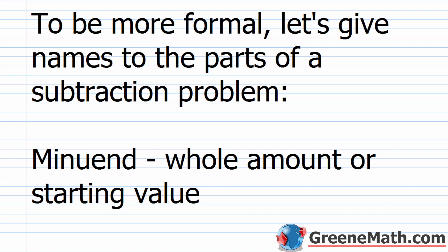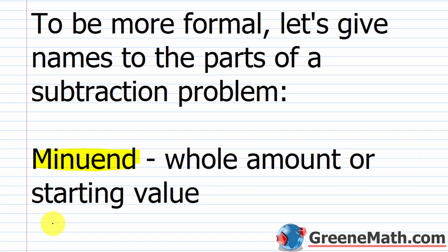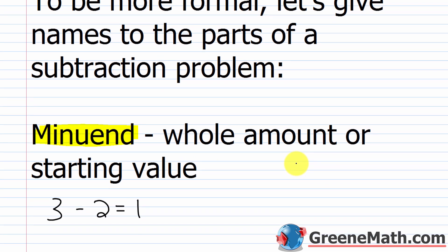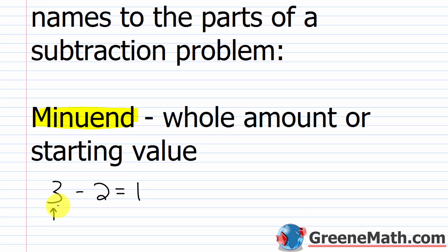To be more formal, let's give names to the parts of a subtraction problem. The first part is called the minuend. The minuend is the whole amount or starting value. So in the problem 3 minus 2 equals 1, the whole amount or starting value is 3, because we started out with $3. So 3 is the minuend.